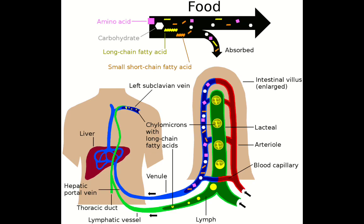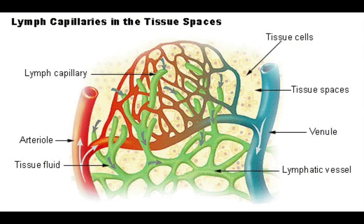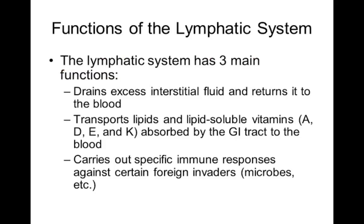Ultimately, lymph passes into much larger lymph vessels known as lymphatic ducts. In our body we have two major lymphatic ducts: number one is the right lymphatic duct, and number two is the left lymphatic duct. This left lymphatic duct is called as the thoracic duct.